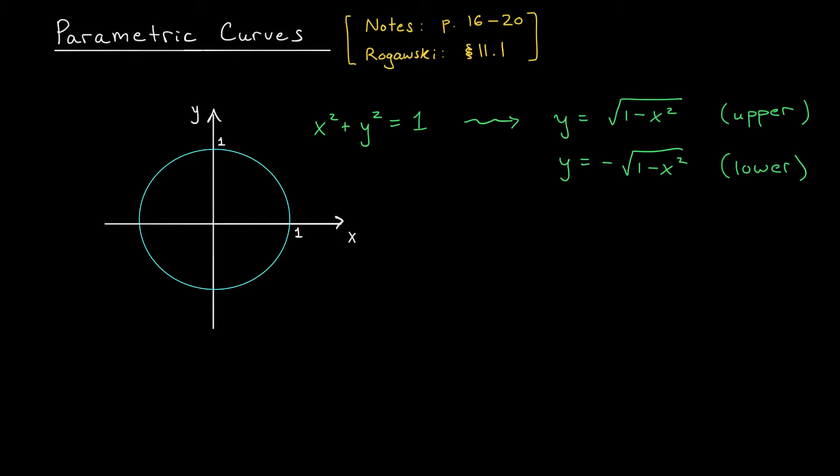Welcome back. Up to now we've been doing calculus almost exclusively with functions y equals f of x, or more recently z equals f of x y. These functions take in one or more inputs but always spit out just a single output. Their graphs are curved lines in R2 or curved surfaces in R3. In this video however we're going to consider a different type of function — one that takes in just one input called a parameter and spits out multiple outputs. It's called a parametric equation and the graph it traces out is known as a parametric curve.